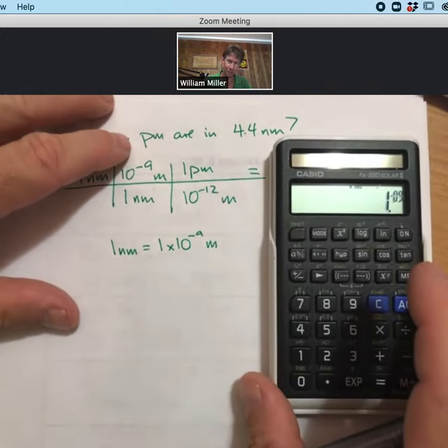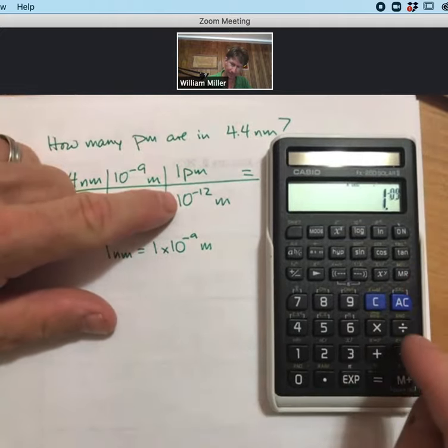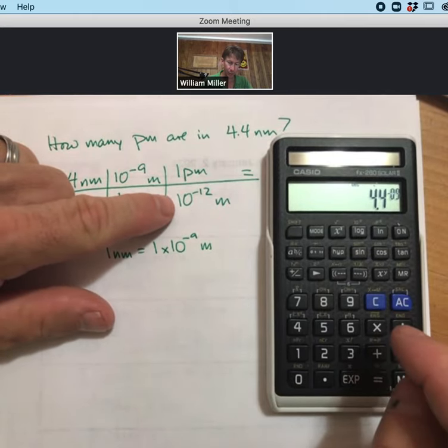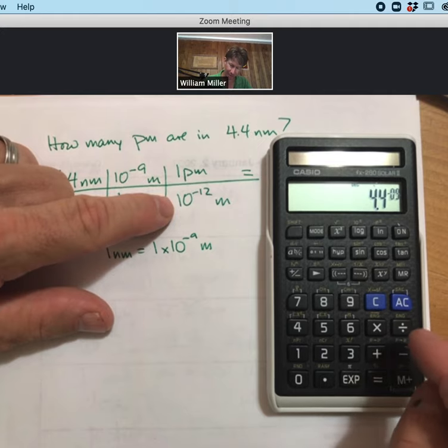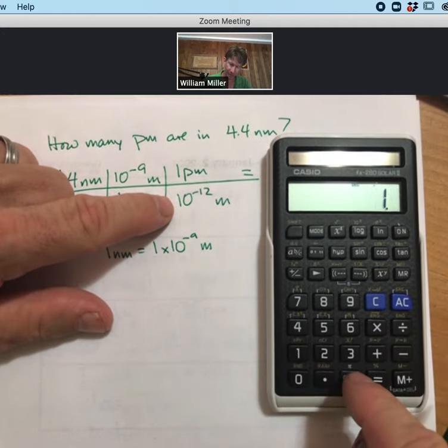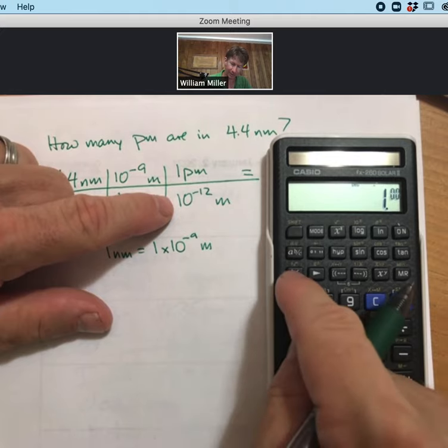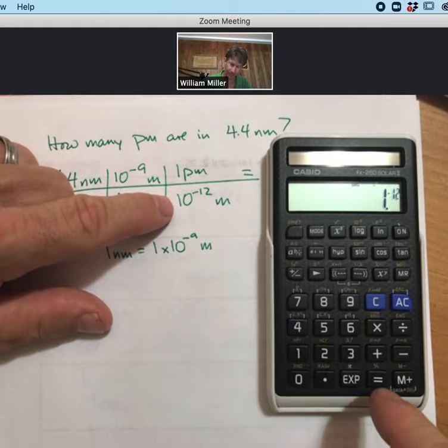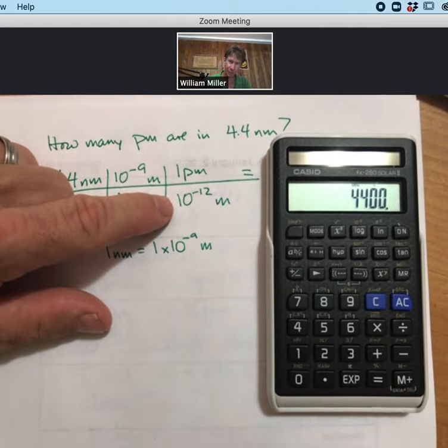Now I then have to divide by 1 times 10 to the minus 12. So I hit divide, and I'll do 1 exponent plus or minus for minus 12. And I get 4,400.